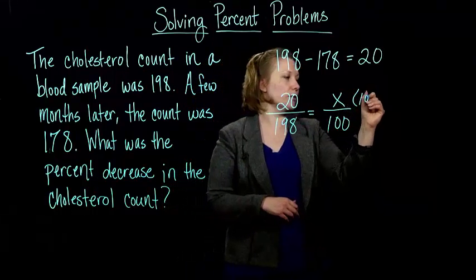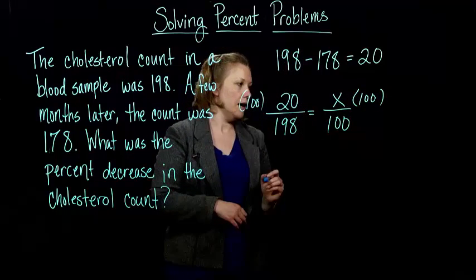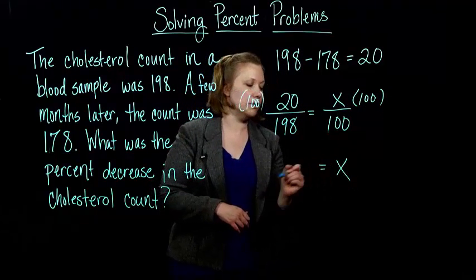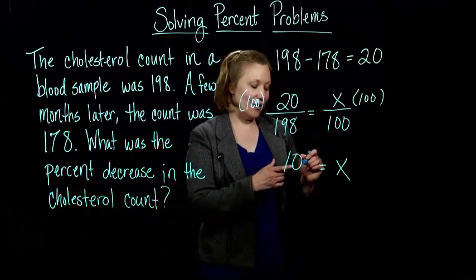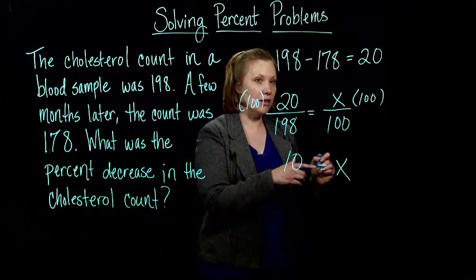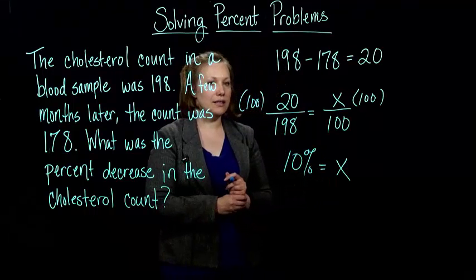So, again, just multiply both sides by 100. And so, we get X equals, and you're going to get, when you round, you're going to end up with 10.10 if you put this in your calculator. But we're just going to round it to 10%.